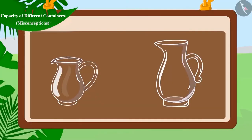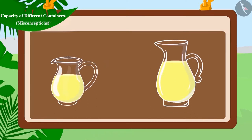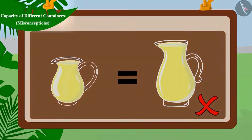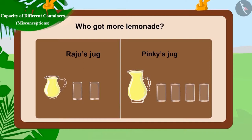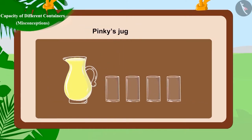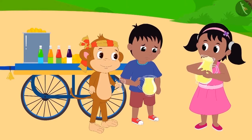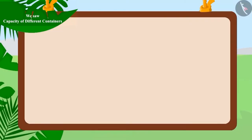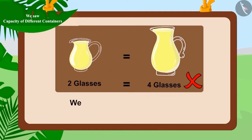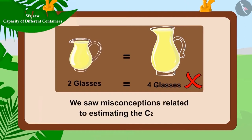Remember, children, the same type of containers may not always have the same capacity. Now, can you tell who got more lemonade? That's correct! Pinky got more lemonade! See how happy she is sipping through her jug with more lemonade! Children, in this video, we saw some misconceptions related to estimating the capacity of different vessels. We'll see you next time!